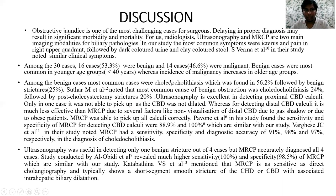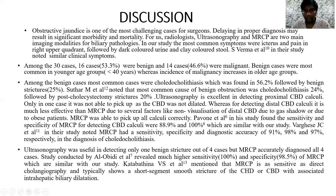Among the benign cases, the most common were choledocholithiasis, found in 56.2%, followed by benign strictures. Soudar M. Adler also noted the most common cause of benign obstruction to be choledocholithiasis in 24% of cases, followed by post-cholecystectomy strictures in 20%. USG is excellent in detecting proximal CBD calculi. In only one case, it was not able to pick up calculi as the CBD was not dilated. For detecting distal CBD calculi, it is much less effective than MRCP because of factors like non-visualization of the distal CBD due to gas shadow or in obese patients.